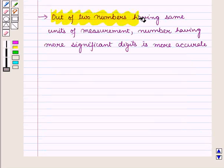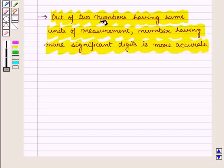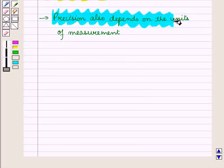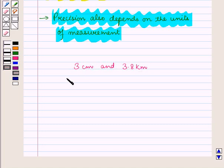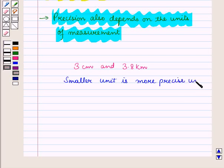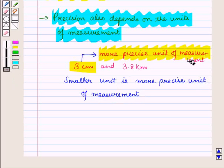Now out of two numbers having same units of measurement, number having more significant digits is more accurate. Precision also depends on the units of measurement. If the units of measurement are different in two given numbers like 3 centimeters and 3.8 kilometers, then smaller unit is more precise unit of measurement. So here 3 centimeters is more precise unit of measurement as centimeter is a smaller unit.